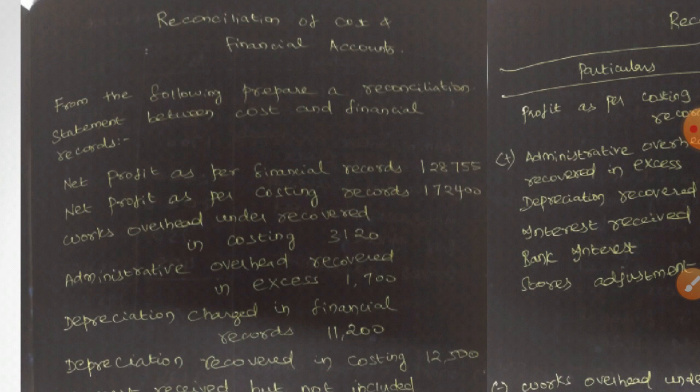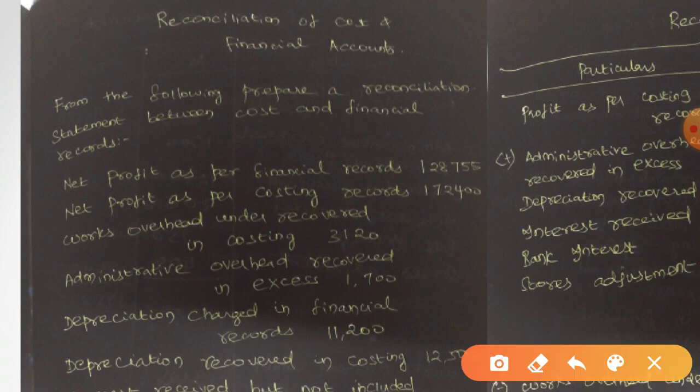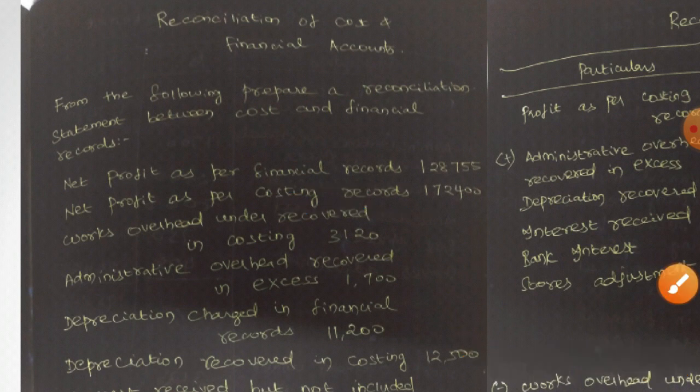In your BRS, when you prepared the bank reconciliation statement, you used two different books — one was your passbook and the other was your cash book. Similarly here, we have two different bases: one is the information from your costing records, and the other is the information from your financial records. In this question, both net profit as per financial records and net profit as per costing records have been given.